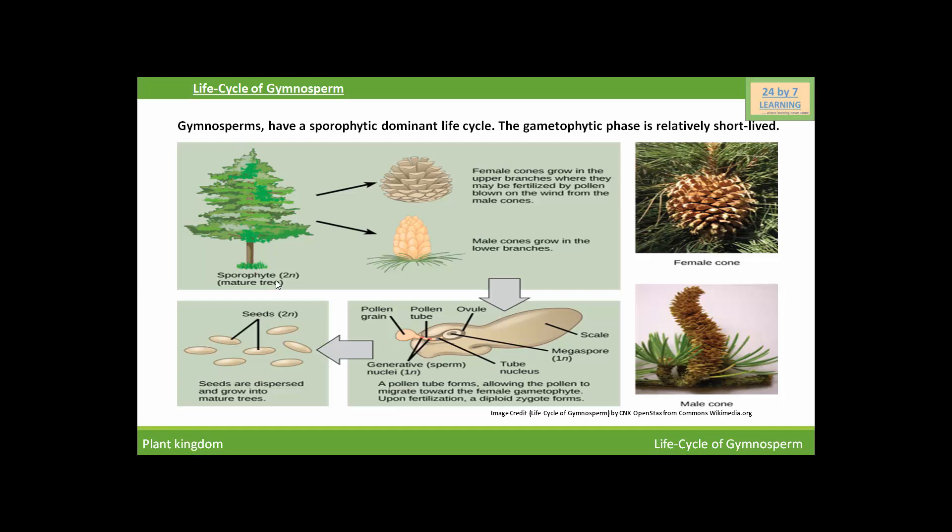Now we are going to discuss about the gametophyte. Spores germinate to produce haploid gametophytic structures. Gymnosperms are heterosporous — they produce haploid microspores and megaspores. The two kinds of spores are produced within the sporangia that are borne on sporophylls, which are arranged spirally along an axis to form compact strobili or cones.